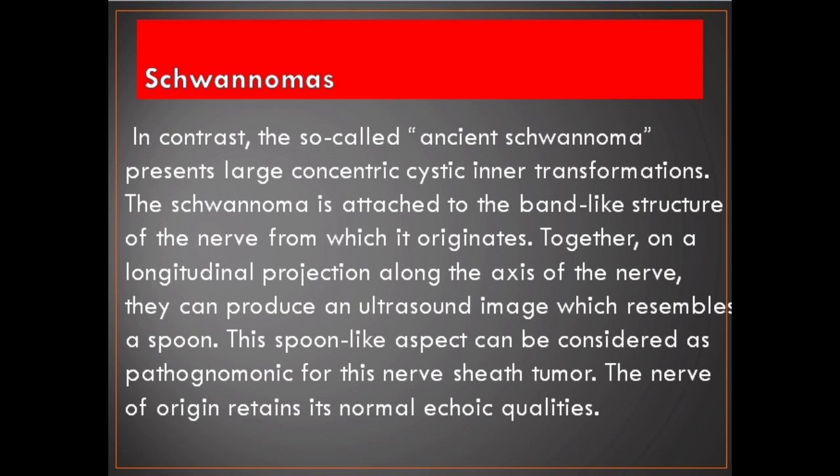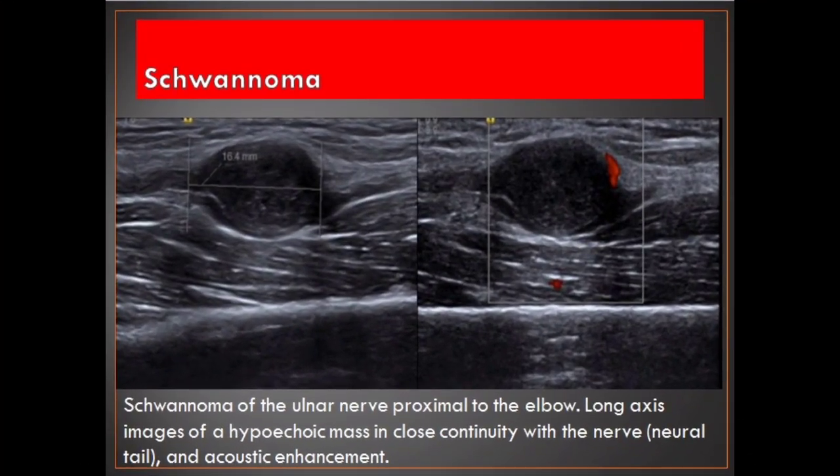In contrast, the so-called ancient schwannoma presents large concentric cystic inner transformations. The schwannoma is attached to the band-like structure of the nerve from which it originates. Together, on the longitudinal projection along the axis of the nerve, they can produce an ultrasound image which resembles a spoon. This spoon-like aspect can be considered pathognomonic for this nerve sheath tumor. The nerve of origin retains its normal echoic qualities. Schwannoma of the ulnar nerve proximal to the elbow — long axis images of a hypoechoic mass in close continuity with the nerve, neural tail, and acoustic enhancement.